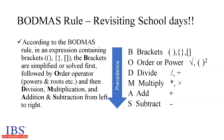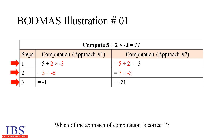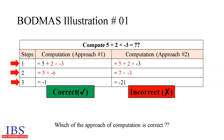Let us look at a few illustrations of the BODMAS rule. In illustration 1, we are computing the expression 5 + 2 × (−3). In approach 1, step 1 computes the multiplication of 2 and −3, and step 2 computes the addition of 5 and −6. In approach 2, it first computes the addition of 5 and 2, giving 7, then multiplies by −3. The correct answer is obtained using approach 1, which follows the BODMAS rule by considering multiplication before addition.